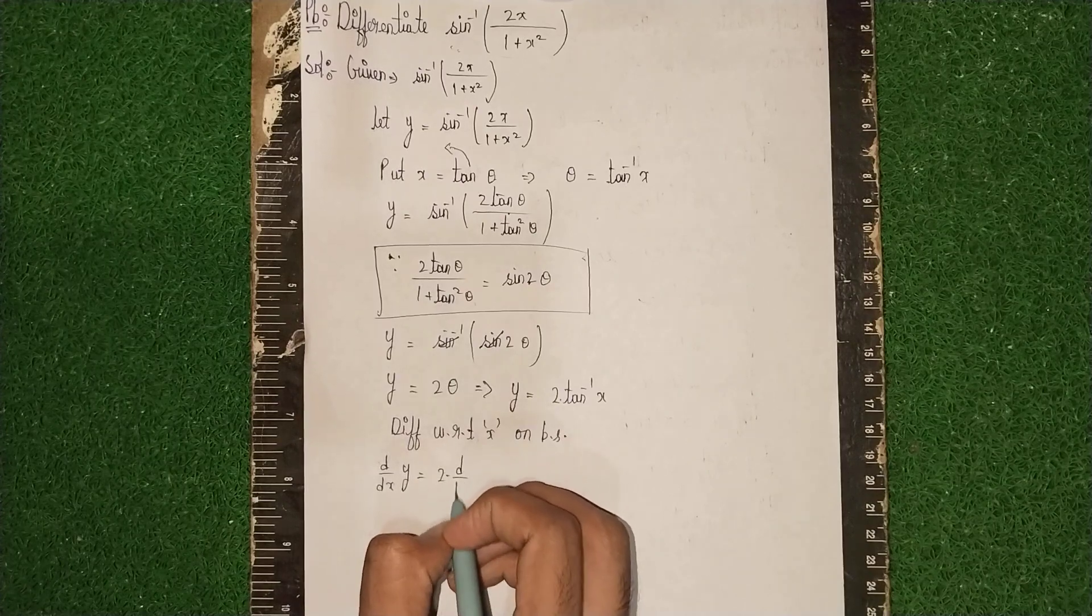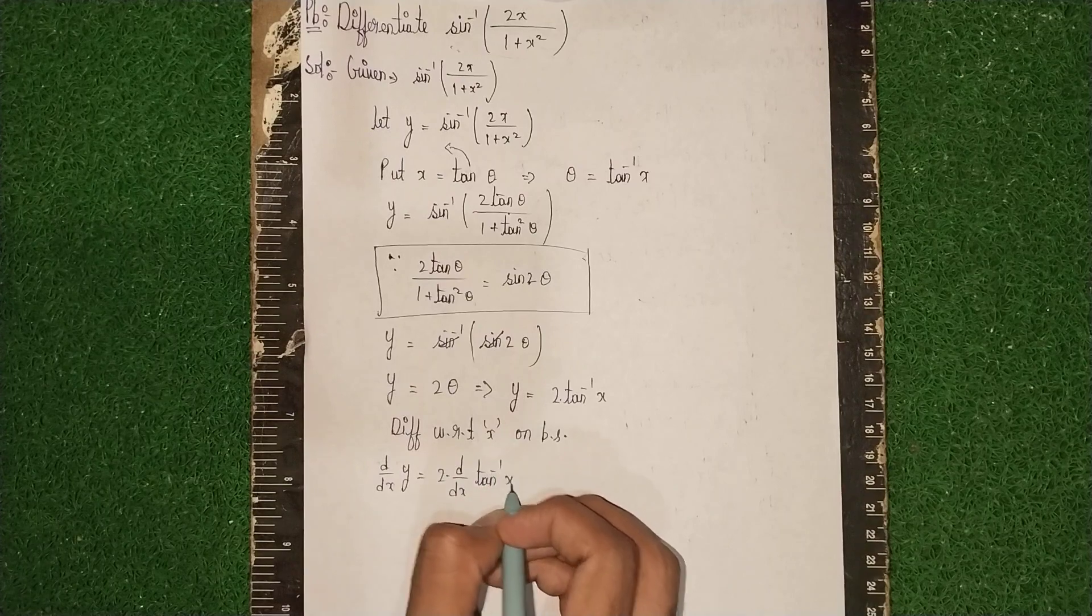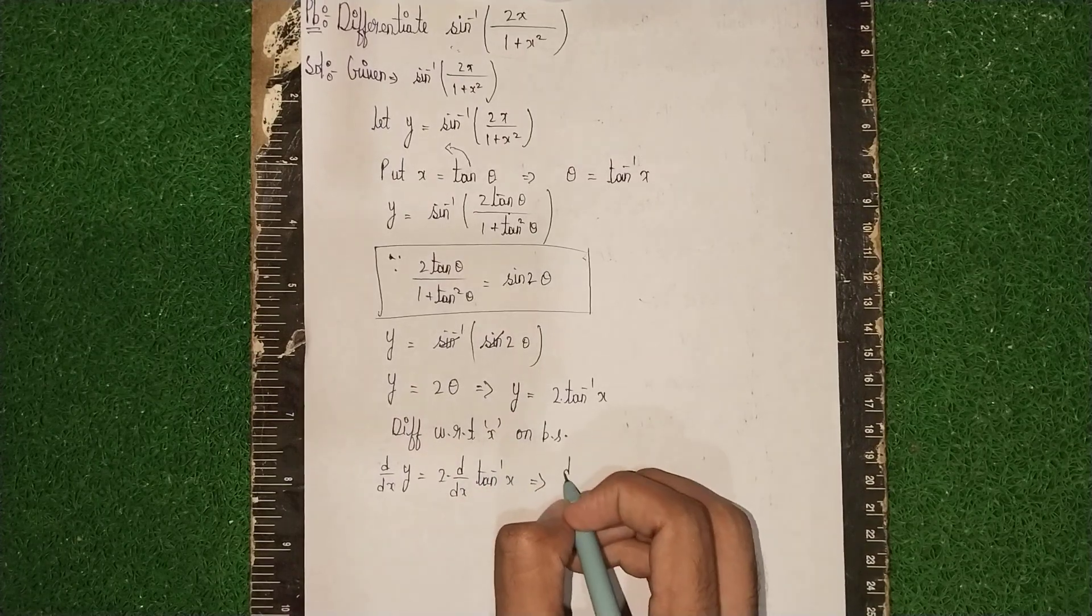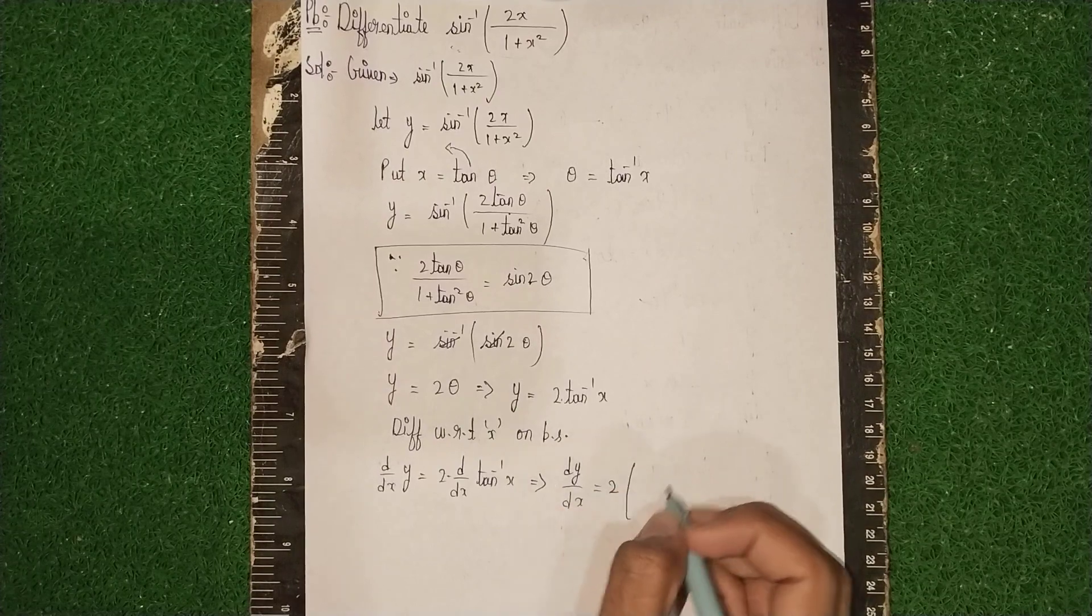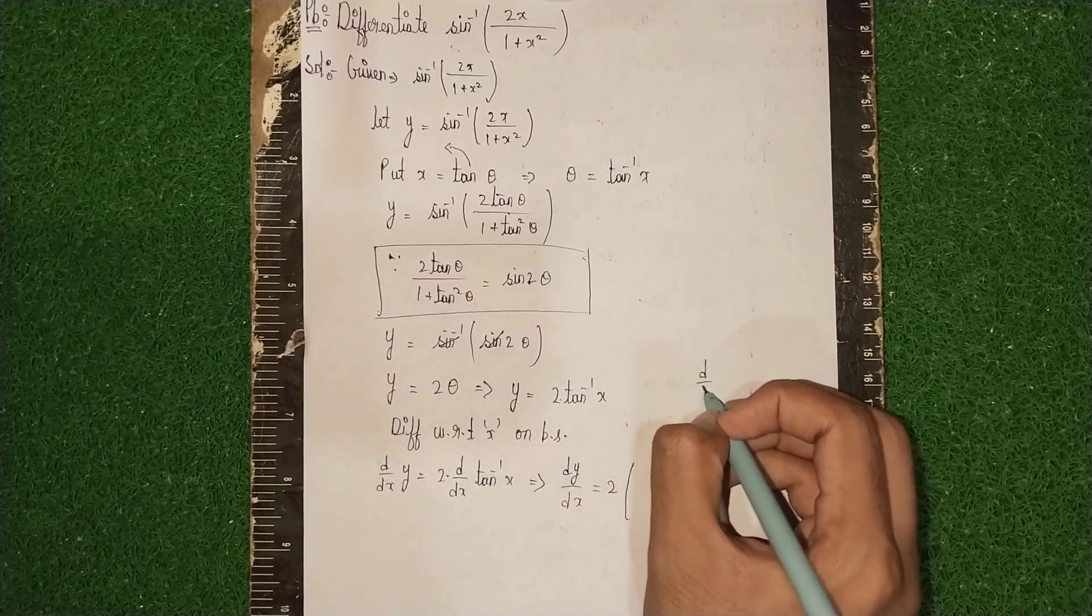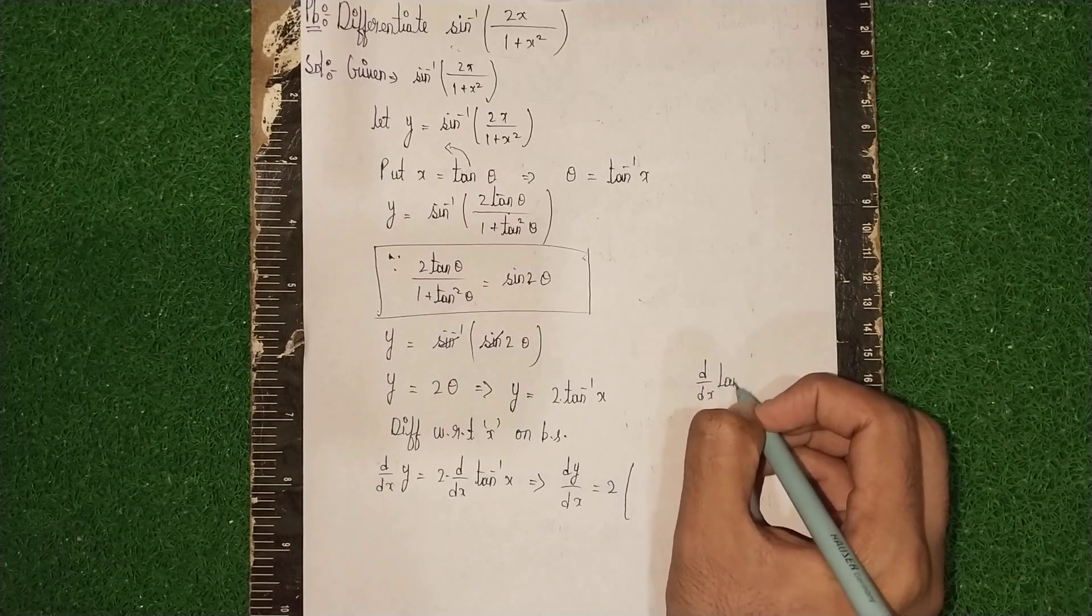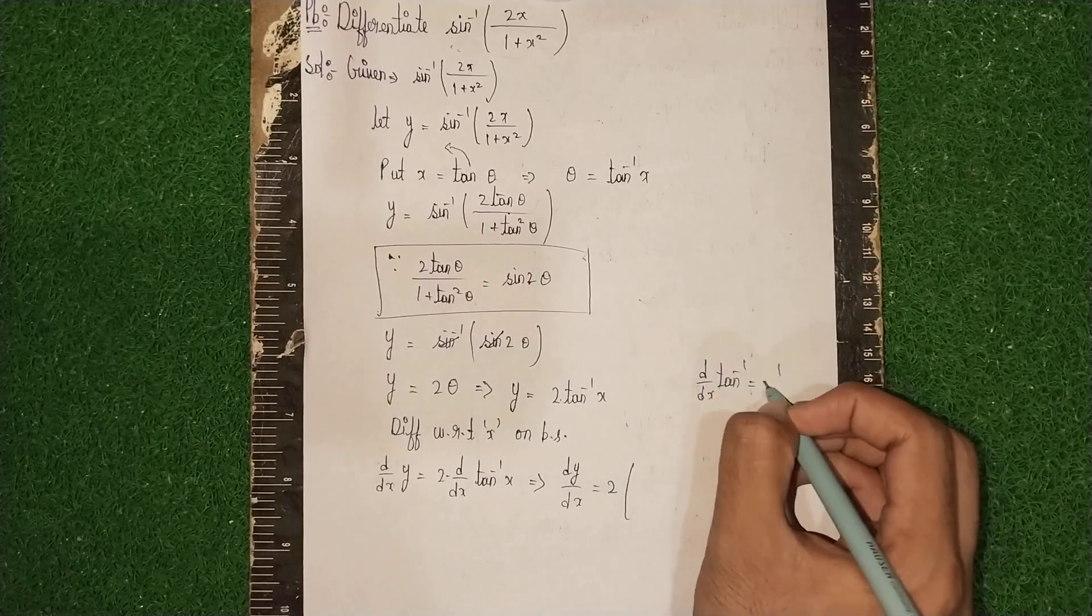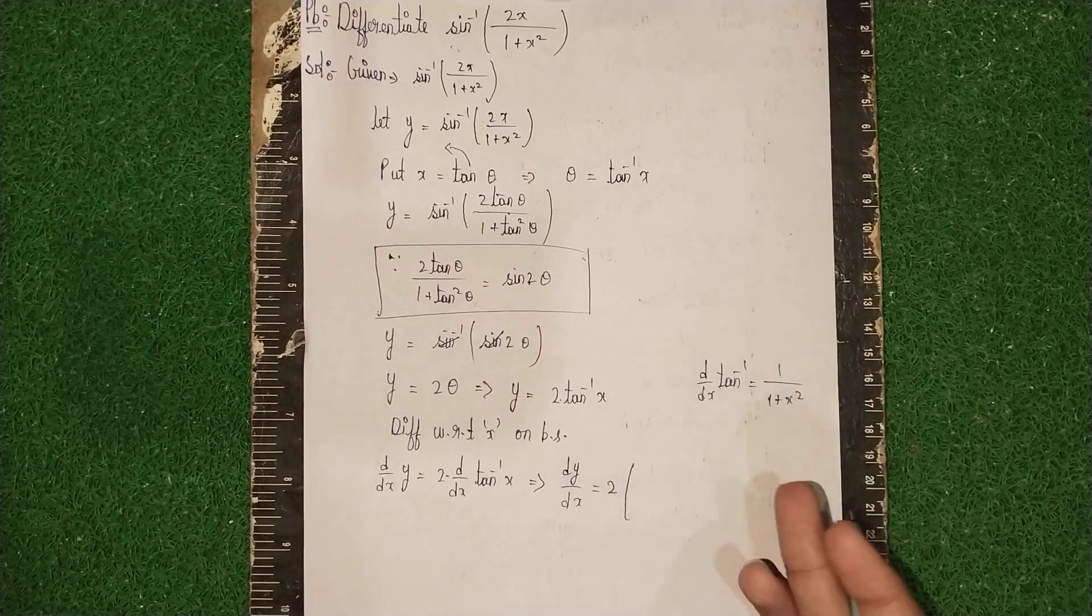The derivative of tan⁻¹(x) - the formula is 1/(1+x²). This is the formula for tan⁻¹(x).